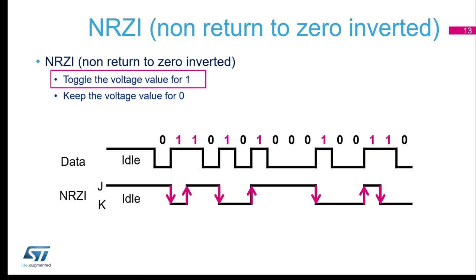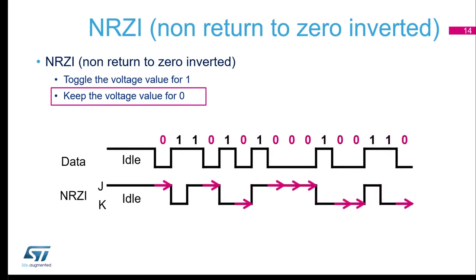The Non-Return-to-Zero Inverted (NRZI) encoding works as follows: you toggle the voltage when you transmit a one, and you keep the same voltage level when you transmit a zero. So if I have a one, I toggle the level; then if I have a zero, I keep the same level.